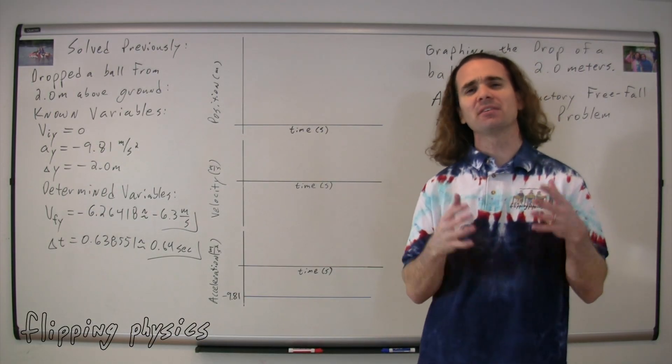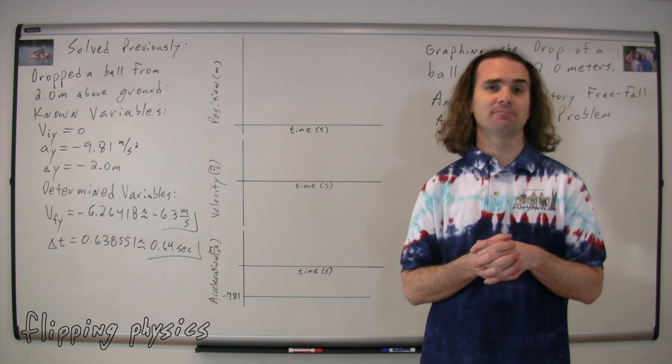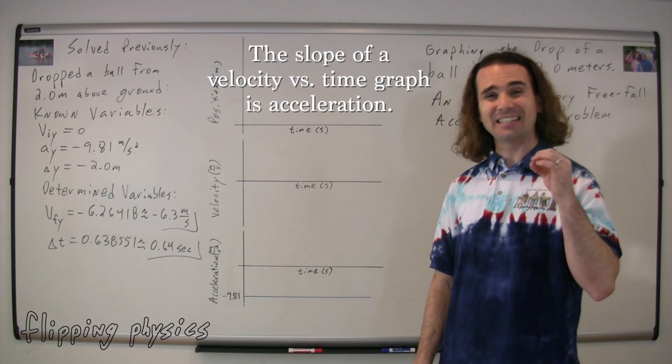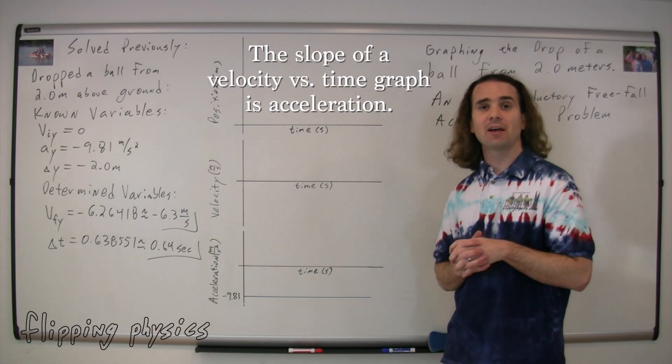Now let's work on our velocity versus time graph. What is the slope of a velocity versus time graph? Acceleration. Right, the slope of a velocity versus time graph is acceleration. Therefore, what do we know about this velocity versus time graph? Because the value of the acceleration graph is constant, that means the slope of the line is going to be a constant negative 9.81 meters per second squared. We also know that the initial velocity is equal to zero, therefore we should start at the origin.